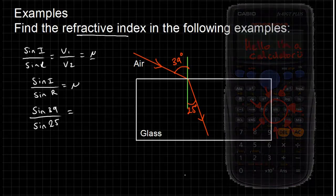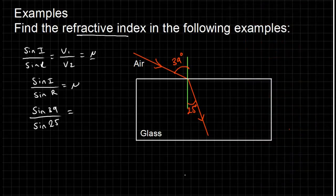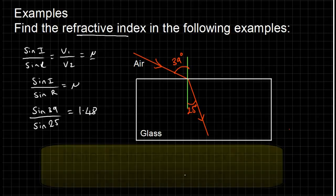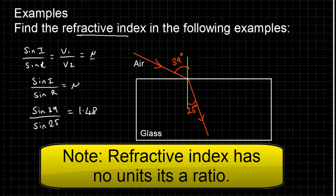Students often get confused, and different calculator makes have slightly different ways of doing this, so just make sure you know what it is to take the sine of something. When I do this, I get an answer of 1.48. Notice there are no units, because you're dividing angles by angles — same units cancel out. It's just a ratio. So that is your answer for this question.